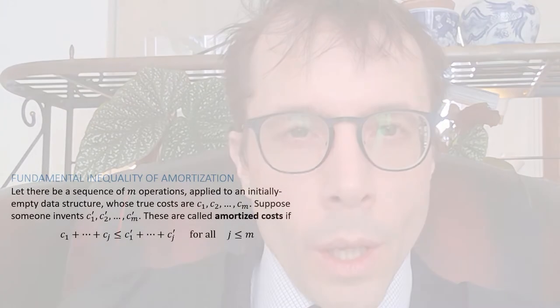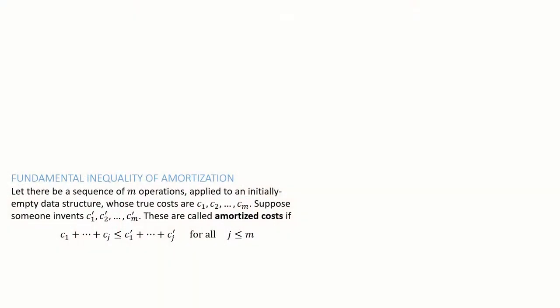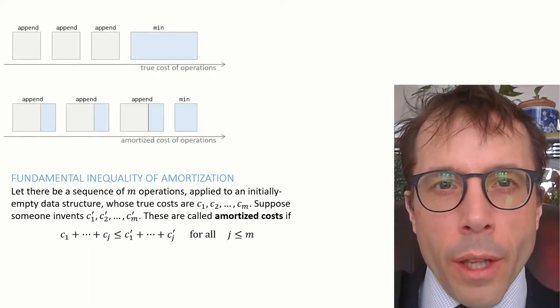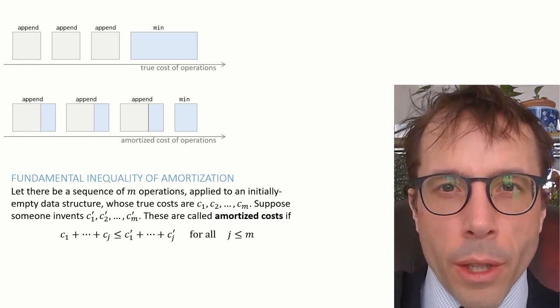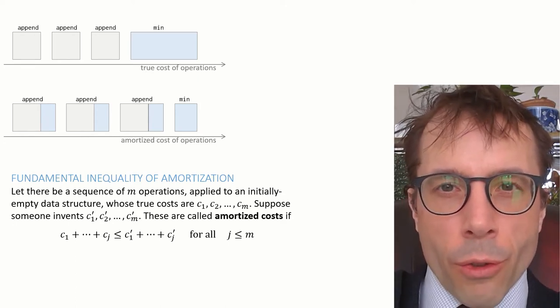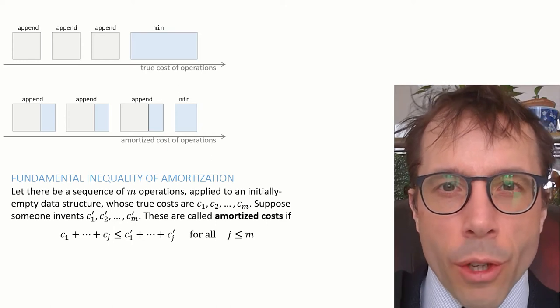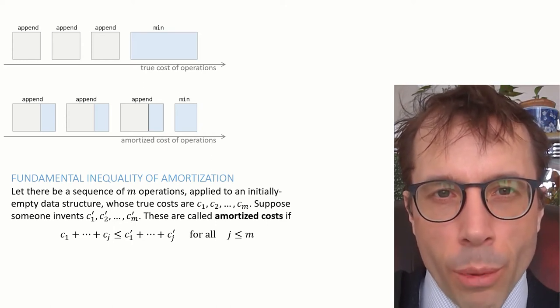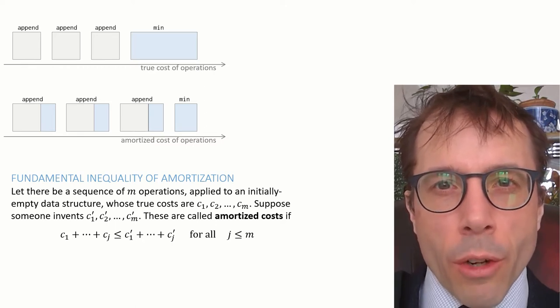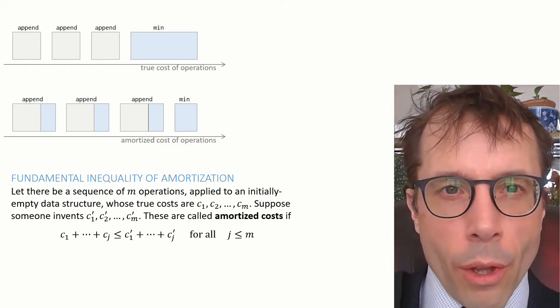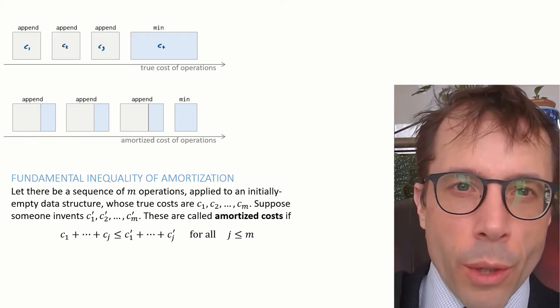Let's jump straight into a definition. Pause the video, read this definition and press play when you're ready. Let's talk through this definition in terms of the min list data structure from the last video. That data structure supports the operations append and min, and we imagine running a sequence of four operations, three appends followed by one call to min. The top diagram shows the true cost of each of those operations, call them c1 up to c4.